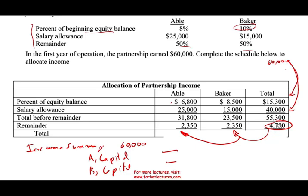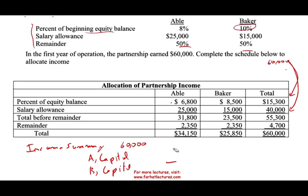The remainder of $4,700 is allocated 50-50. Therefore, Abel's total allocation is $34,150 and Baker's total allocation is $25,850. The journal entry debits income summary $60,000, credits Abel's capital $34,150 and Baker's capital $25,850, based on the agreement.